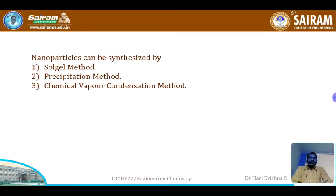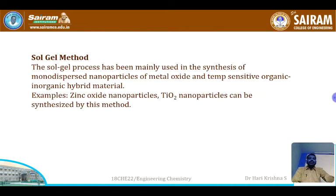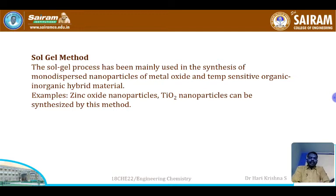Starting with the sol-gel method. Sol-gel means the process of first preparing a sol, then converting it to a gel, and finally obtaining nanoparticles. The precursor begins with the formation of a sol, this sol is converted to a gel, and then through a calcination process we obtain the nanoparticles.